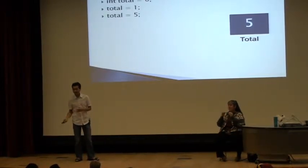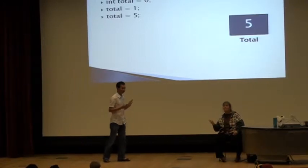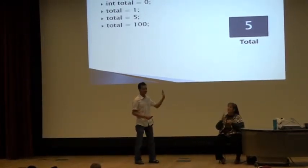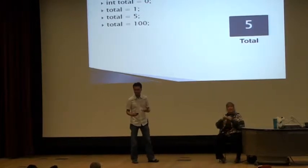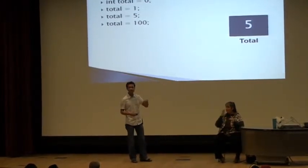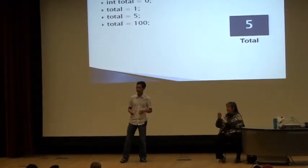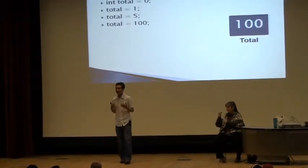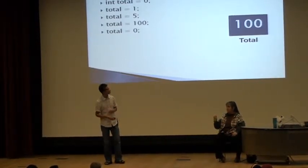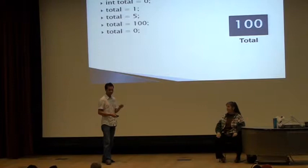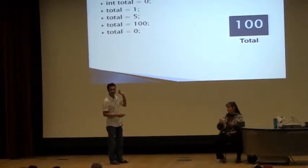So now we go total equal to five. So obviously what will happen? The value within the space will just change to five. So that's how the variable is happening. We're just reusing the same thing over and over by putting different values into it. Now our final value output is total equal to 100, so then the thing will change to 100.